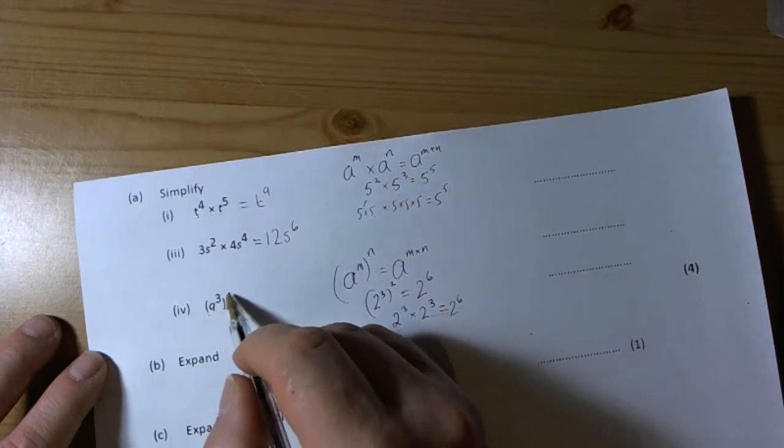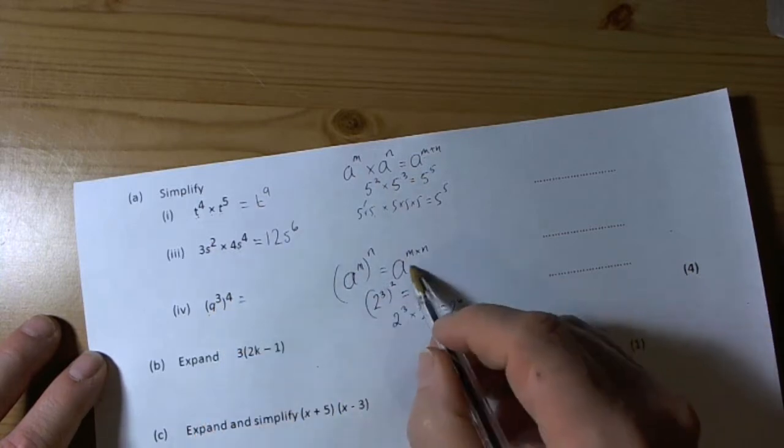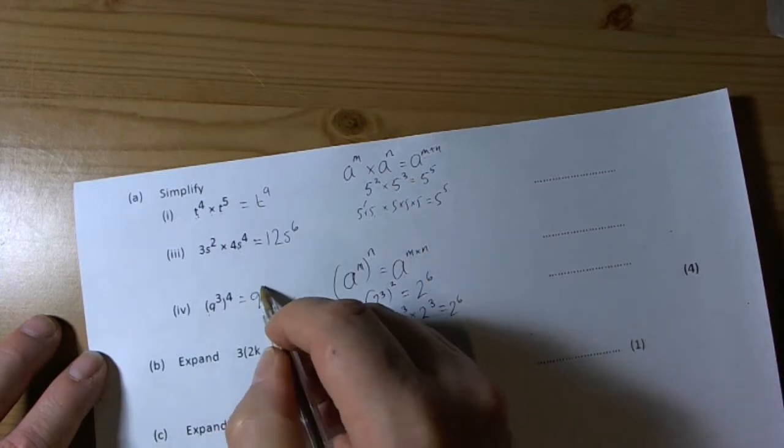Here we've got q cubed to the power of 4. Well, the rule says that we multiply the two powers, so 3 times 4 is 12.